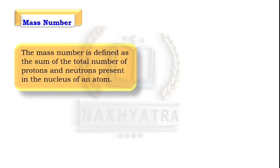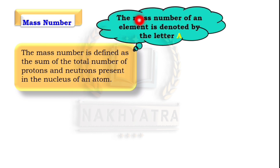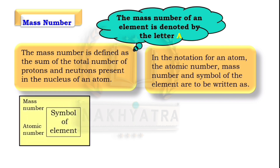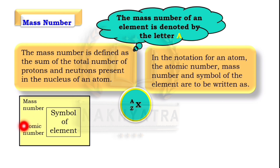The mass number is defined as the total number of protons and neutrons present in the nucleus of an atom. The mass number of an element is denoted by the capital letter A. In the notation for an atom, the atomic number, mass number, and symbol of the element are written as: X represents the symbol, A is the mass number written above the symbol, and Z is the atomic number written below the symbol.